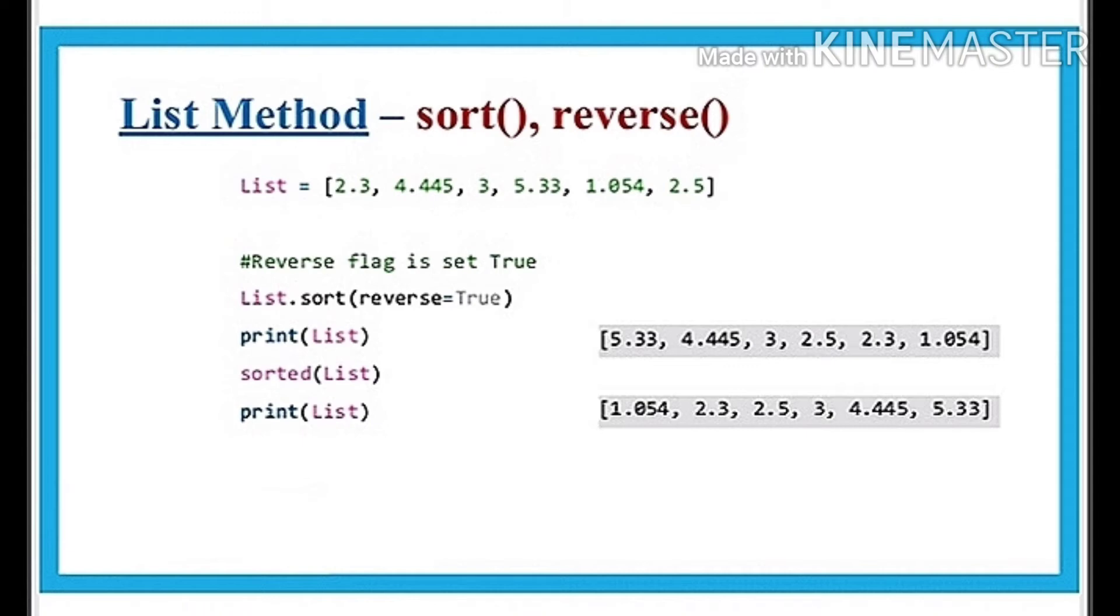Sort and reverse. Sort is used to arrange the elements of a list in ascending order, whereas reverse is used to reverse the entire list.